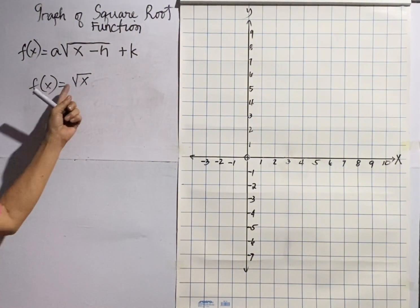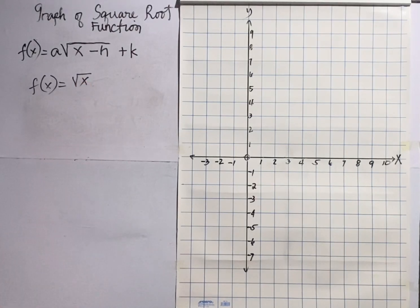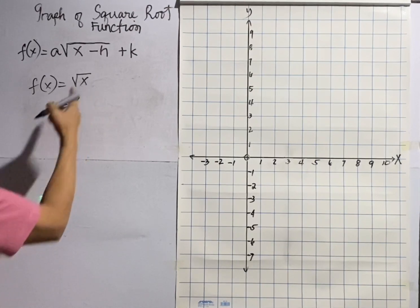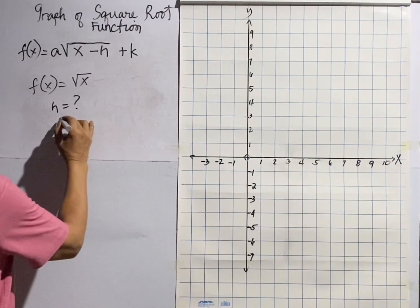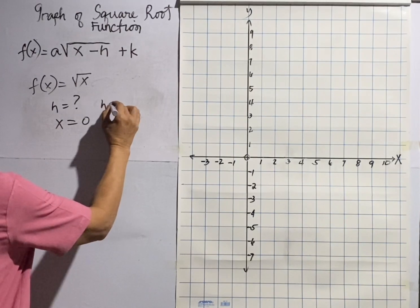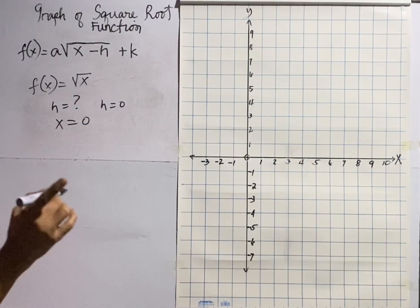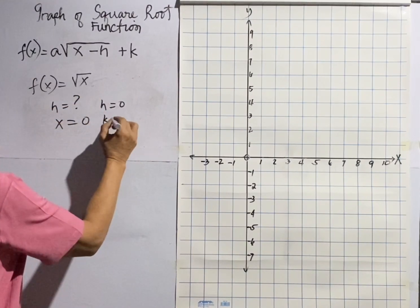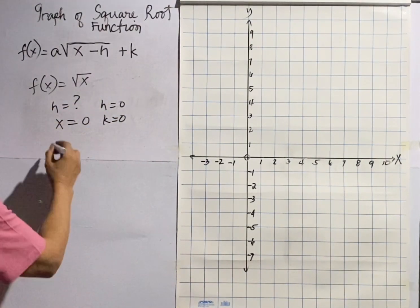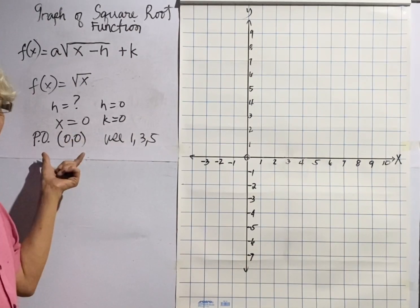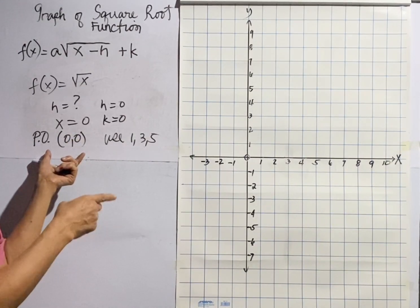Let us first graph the parent of all square root functions, which is f(x) equals the square root of x. First thing first: find the coordinates of the point of origin. To find it, equate the radical to zero, so x equals zero. Since there is no constant number outside the radical, k is also zero. Therefore the point of origin is (0, 0). Plot it in the coordinate plane.